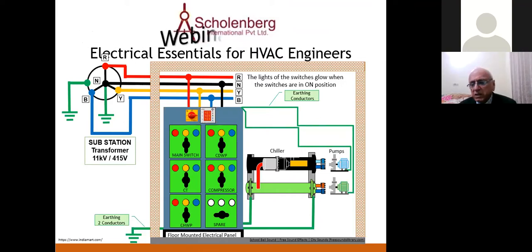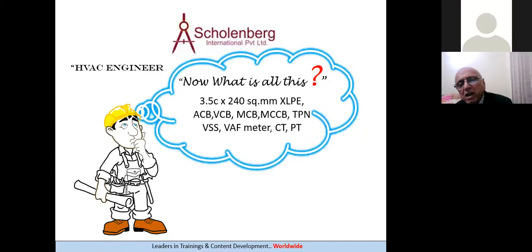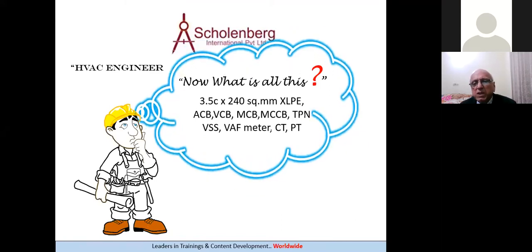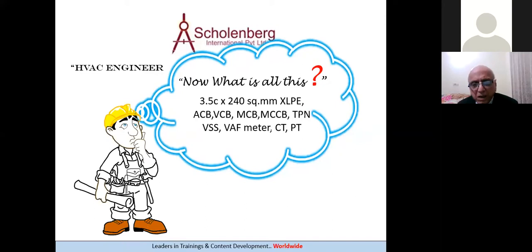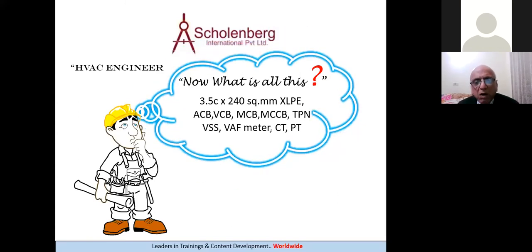So what are those elements? When you come across any tender document and look at the electrical section, you'll find the main section talking about the air conditioning equipment, and then the electrical section is totally separate. You will come across terms like 3C into 240 square mm, XLPE, ACV, VCV, MCV, MCCB, TPN, VSS, VAF meter, CT, PT. The HVAC engineer should understand the tender documents, tender specifications, and electrical drawings to undertake construction billing of the electrical section.